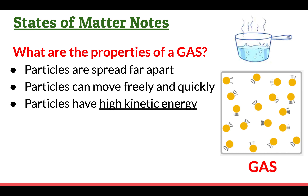Now, the last state is a gas. Particles in a gas are spread very, very far apart — notice each particle is spread far apart. These particles can move freely and very quickly because they're more separated, so they can move around more freely. These particles have very high kinetic energy. Out of all three states, the particles in a gas will have the most kinetic energy.